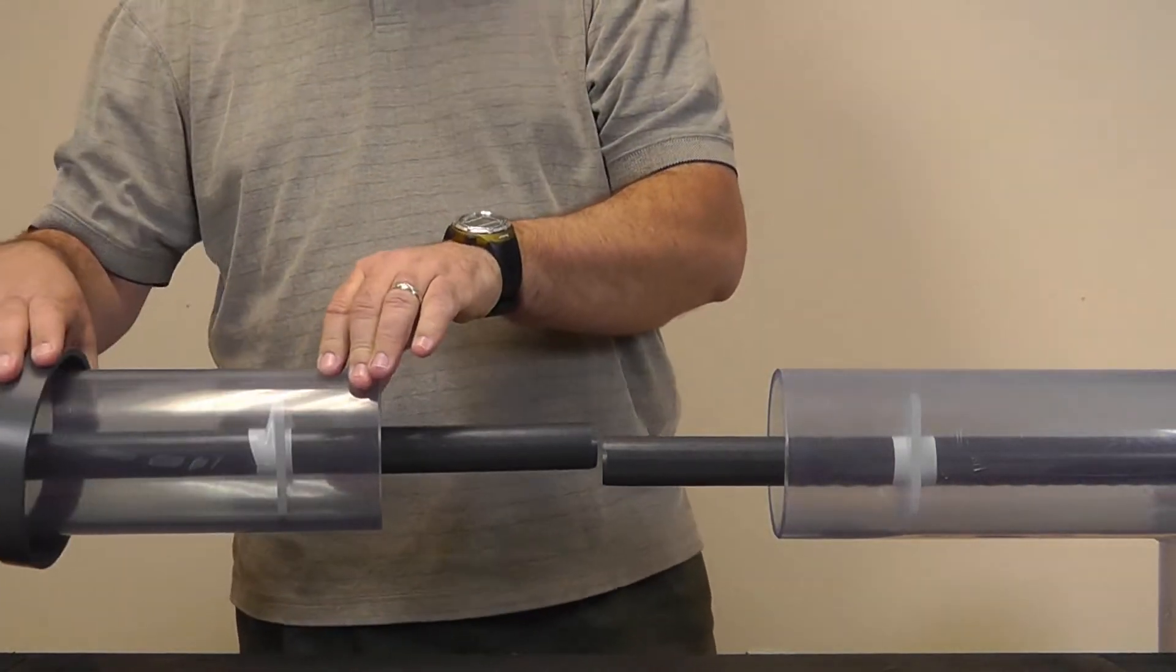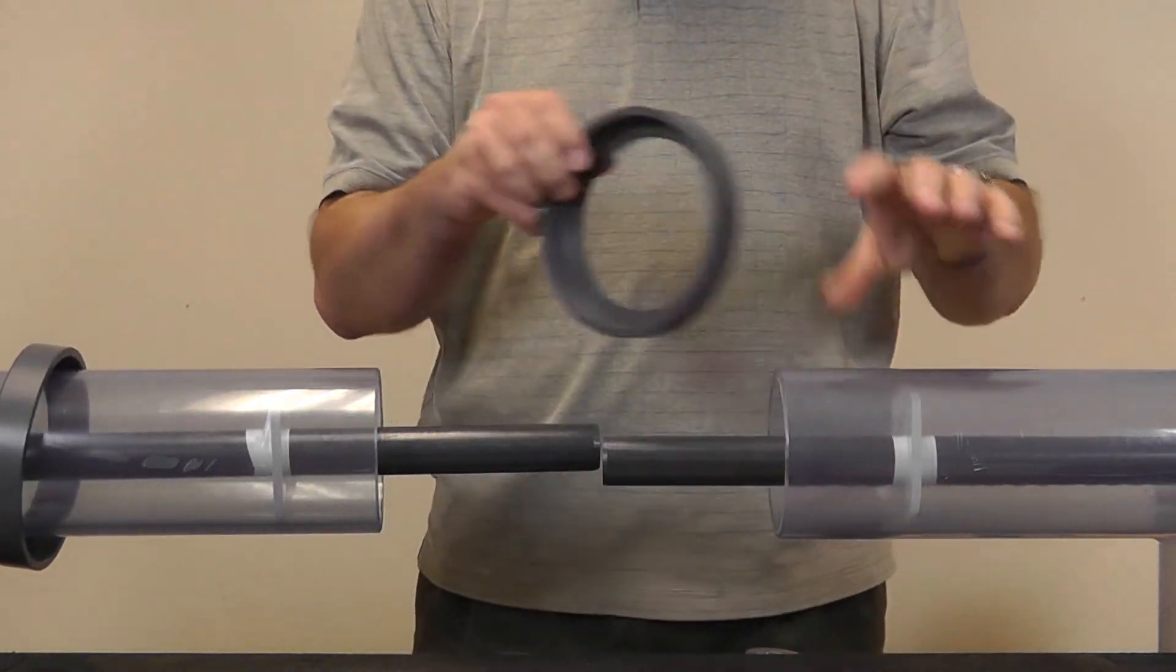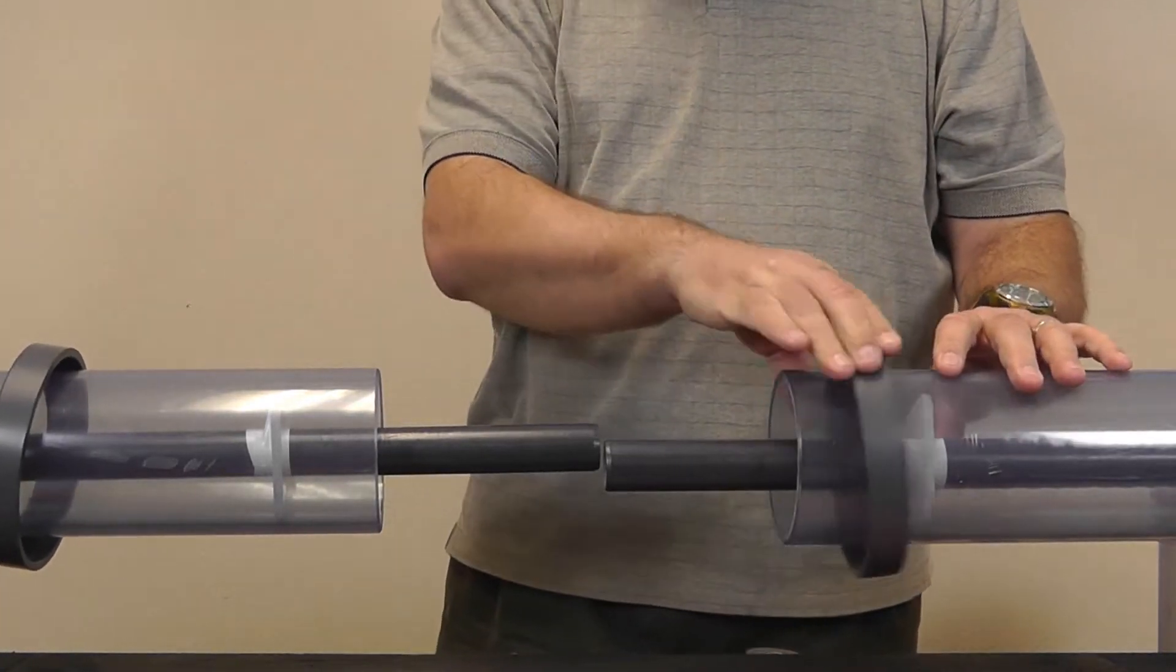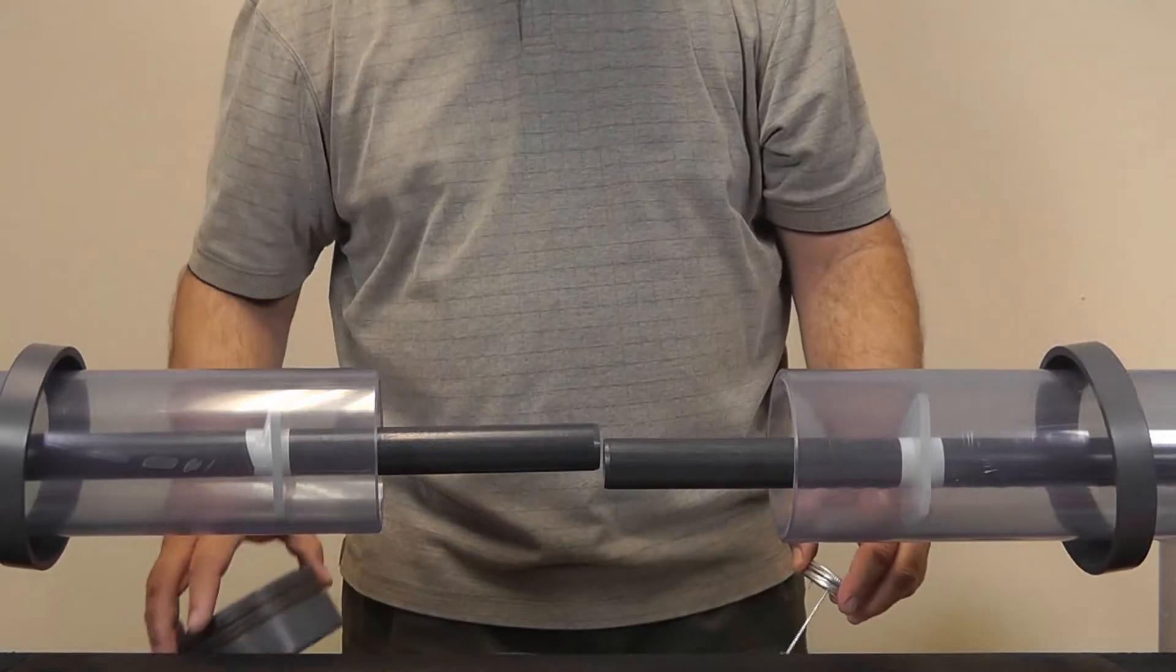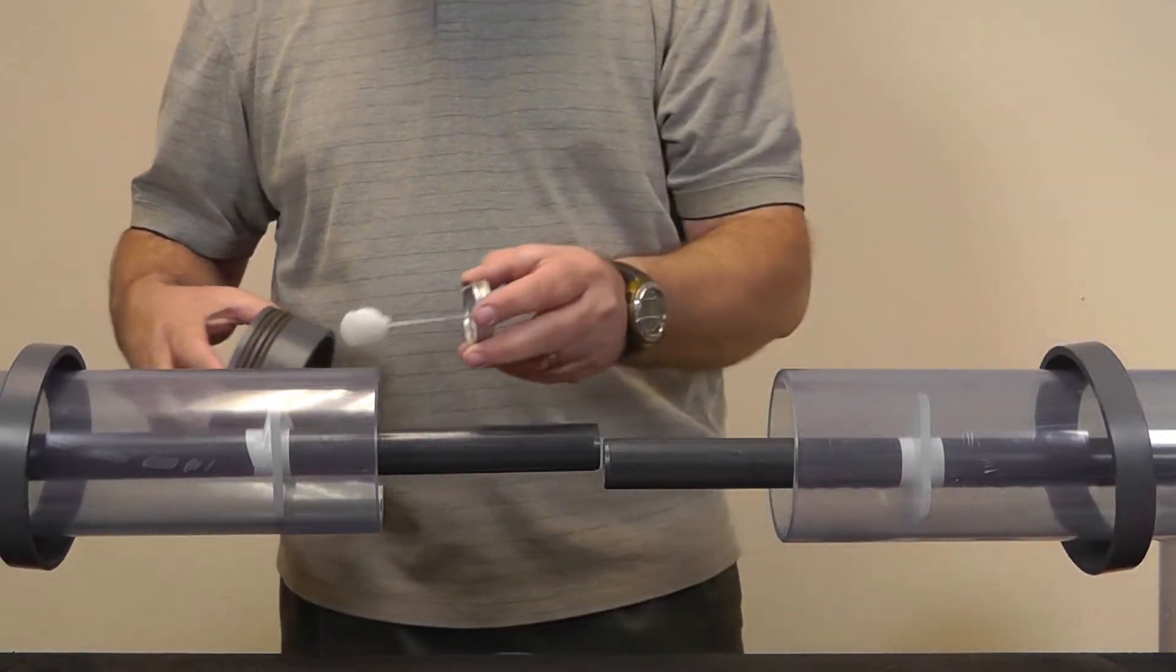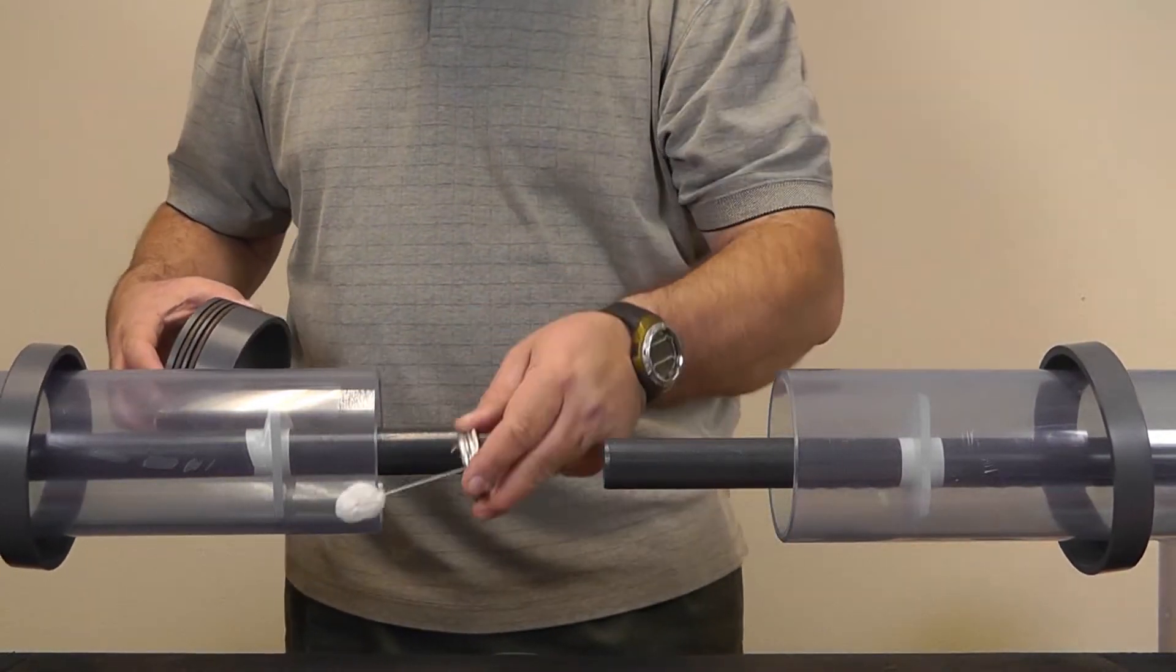Install the two end caps on each side of your containment pipe, then solvent cement the seal carriers in place on each end of the containment pipe.